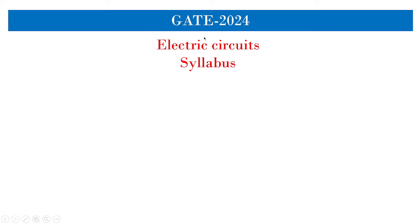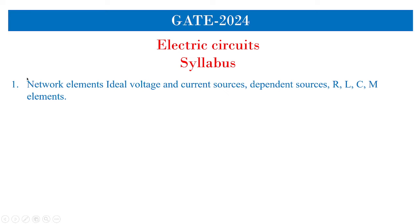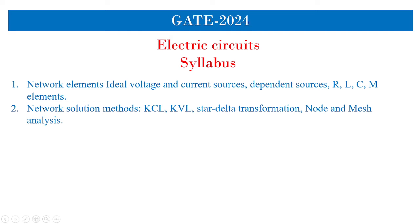For the coming Gate 2024, the electrical circuit syllabus is designed such that you have network elements — ideal voltage and current sources, independent sources, RLC, and M parameters where M is the mutual inductance parameter. Then the solution of circuits and networks with KCL, KVL, star-delta transformation, node analysis and mesh analysis. This is another area you need to focus on.